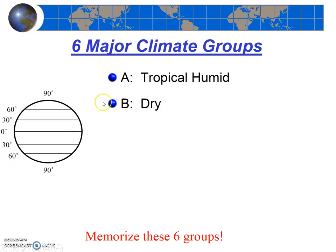Next are B climates — the dry climates — and they tend to be near 30 degrees north and south. At 30 degrees north and south we have the subtropical high, and in a high-pressure cell the air is descending. Descending air means there are no clouds or rain, because you need rising air to form clouds. So right around 30 degrees is where we have many of the world's deserts. Our B climates, our dry climates, tend to be near 30 degrees, though they aren't all near 30 degrees.